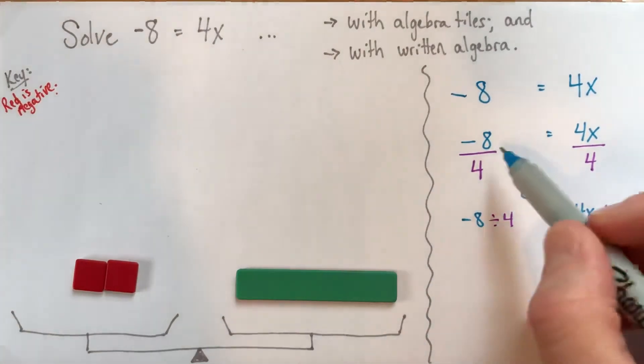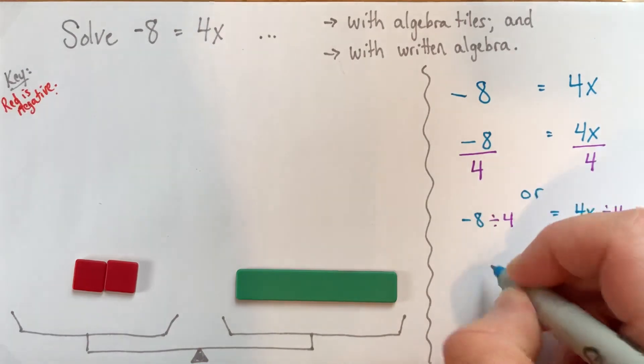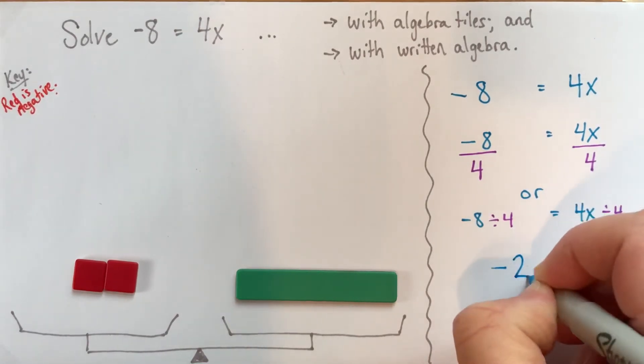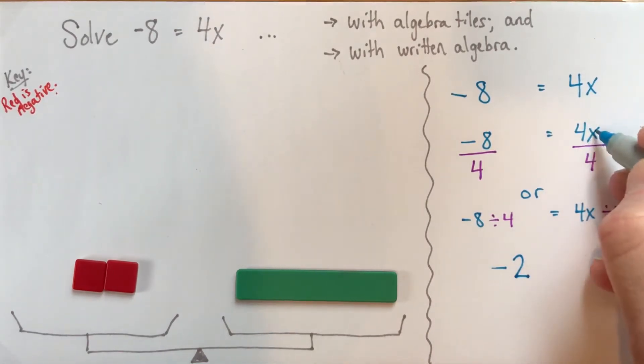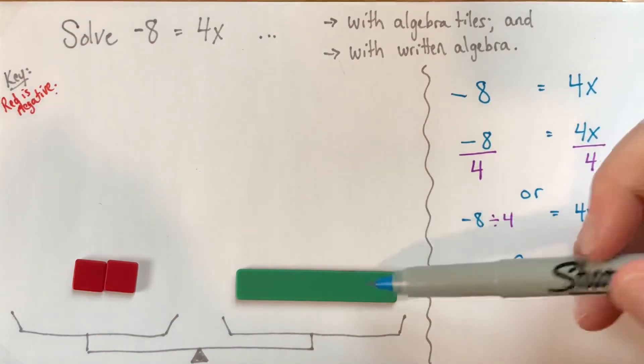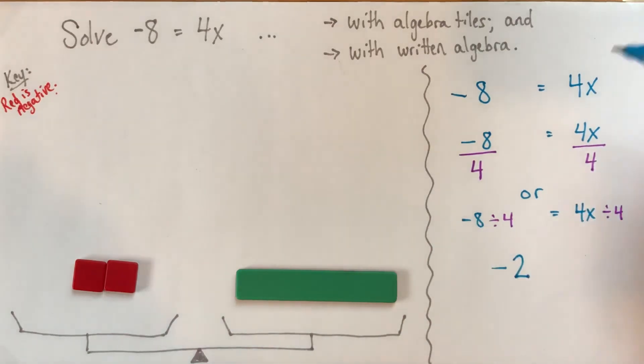And if I consider negative 8 divided by 4, that is negative 2. And 4x divided by 4, there's different ways to think about what this means. One of them is to look at the picture and see what we have here.